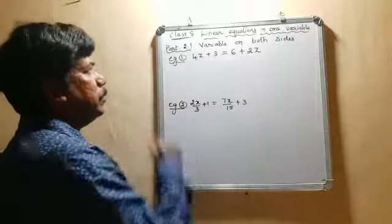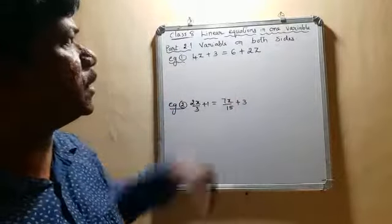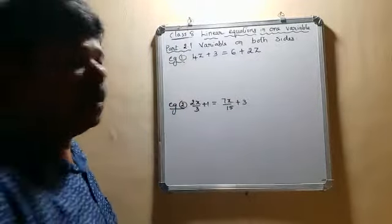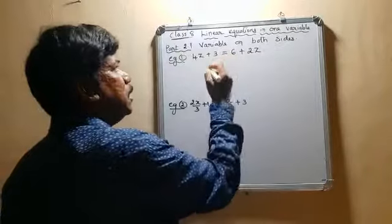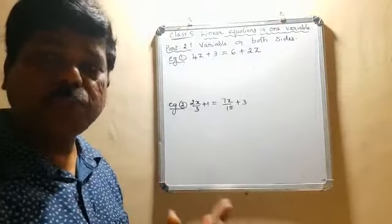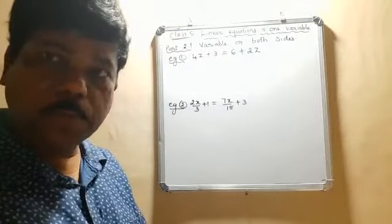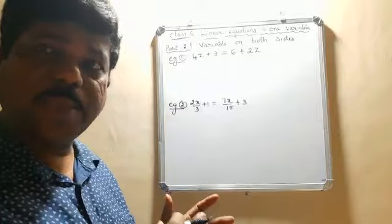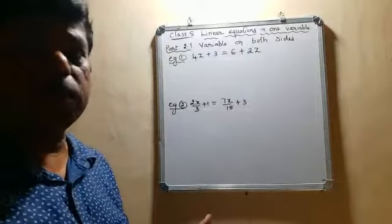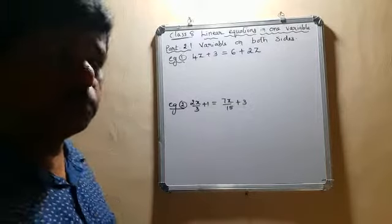In this first example, it is given that 4z plus 3 equals 6 plus 2z. Let us start by transposing the quantities which have the variable from one side to the other, and those quantities which do not have the variable from one side to the other.